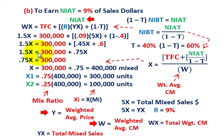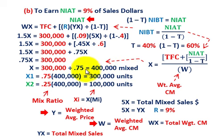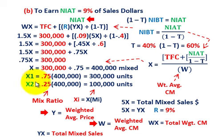Dividing both sides by 0.75, we again get X = 400,000 total mixed units. Allocating: X1 is 0.75 × 400,000 = 300,000 units, and X2 is 0.25 × 400,000 = 100,000 units. So the total unit quantities are the same as in Case 1.